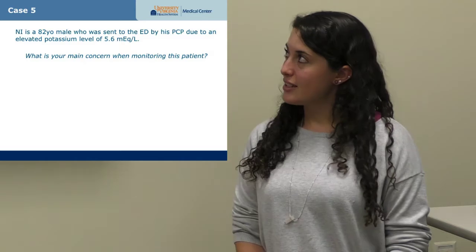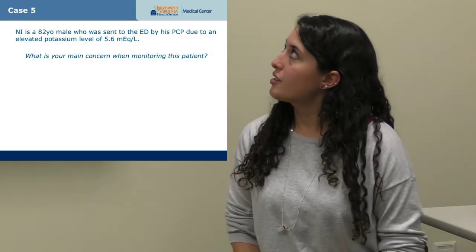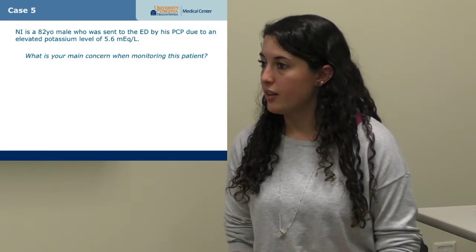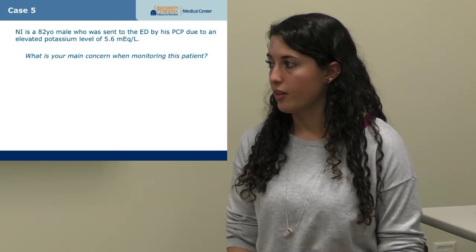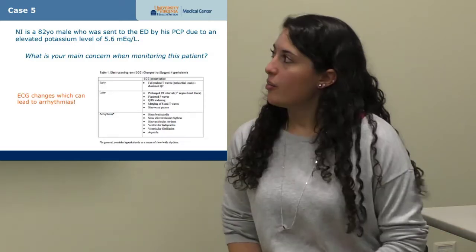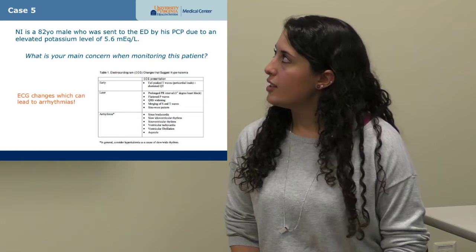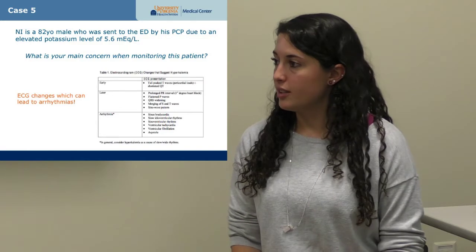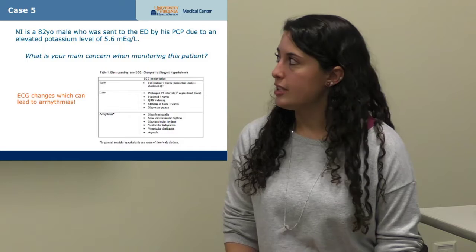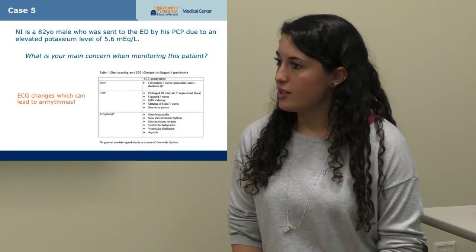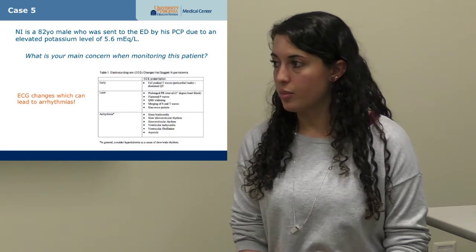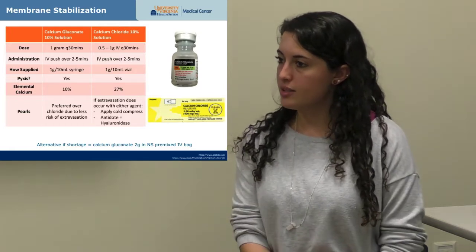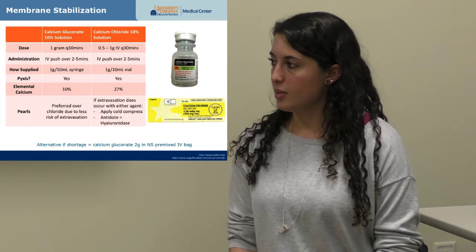Our last case: N.I. is an 82-year-old male sent to the ED with a potassium level of 5.6. The main concern with hyperkalemia is cardiac — you should get an EKG immediately. Findings may include tall T waves, a prolonged PR interval, and QRS widening, all of which can progress to life-threatening arrhythmias like V-fib or V-tach. Treatment must start quickly. Our three domains of treatment are: cardiac membrane stabilization, redistributing potassium, and eliminating potassium.